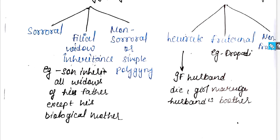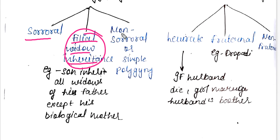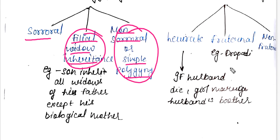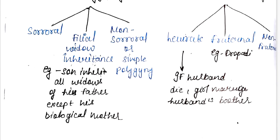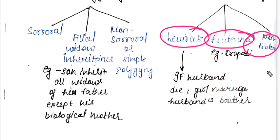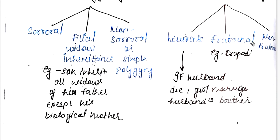Polygyny subtypes are sororal, filial, widow inheritance, non-sororal, and simply polygyny. Polyandry subtypes are levirate, fraternal, and non-fraternal.